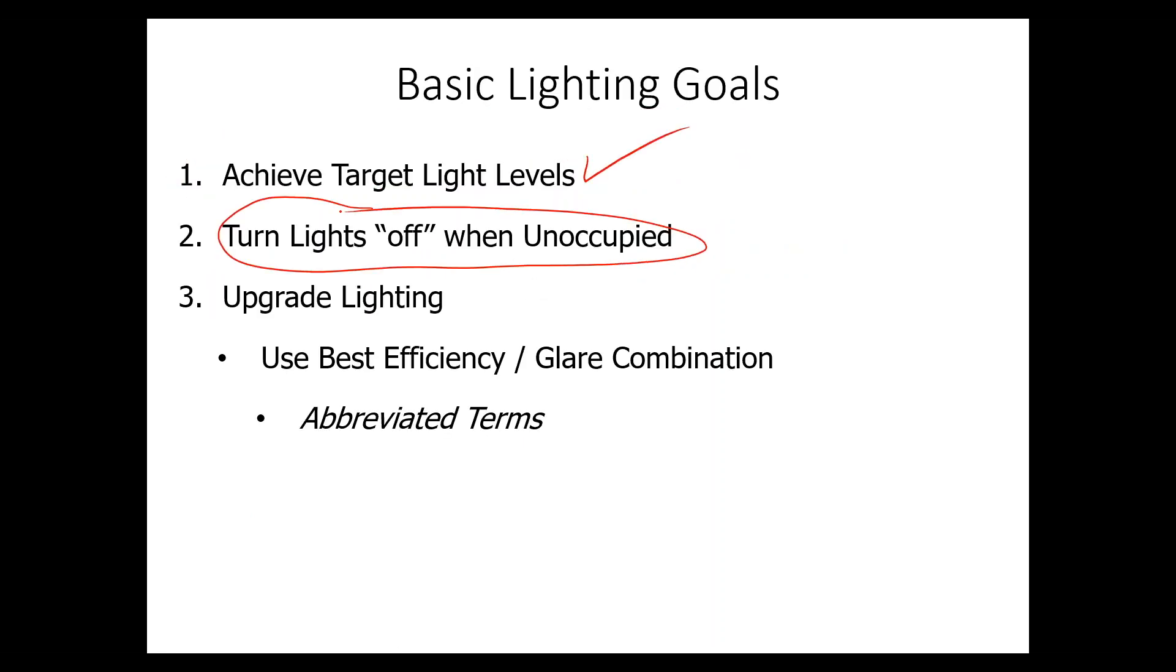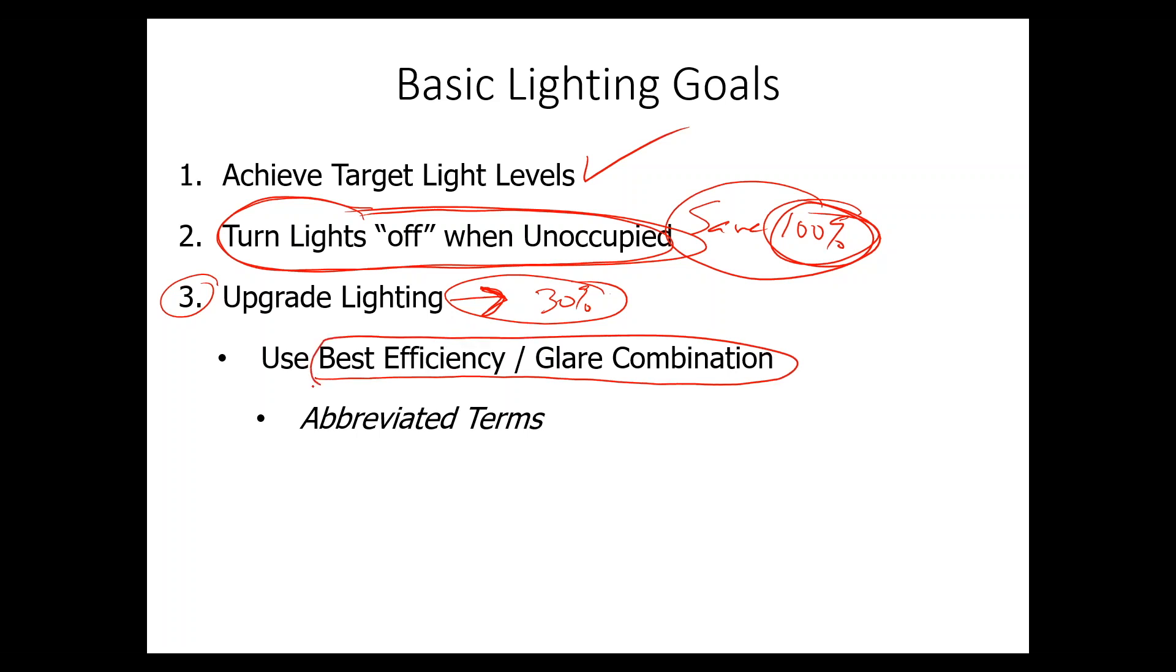The next principle is to turn the lights off when the building is unoccupied or the space is unoccupied. This is obvious because you save 100% of the energy when you turn things off. Then the next step is to upgrade the lighting. And again, you can get pretty attractive returns. The goal there, and there's a lot of different ways to go as far as upgrades, and this is a basic webinar. We might do an advanced one that would go in more detail. But basically, what you're trying to do is get the best efficiency or efficacy and glare combination there.